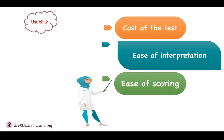A test must also ensure ease of scoring. The scoring procedure must be very simple. All scoring directions and the scoring key should be available to make scoring objective. The examiner's bias or the examinee's handwriting should not affect the scoring of the test.